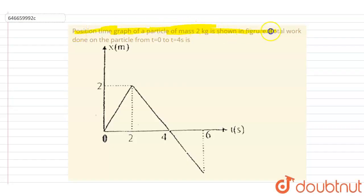...of a particle of mass 2 kg is shown in the figure. The total work done on the particle from t equals zero to t equals four seconds.